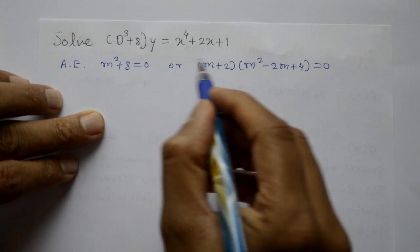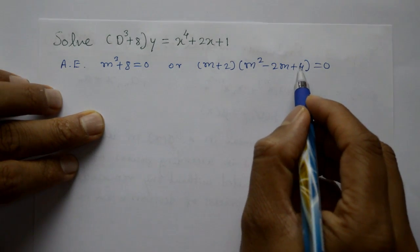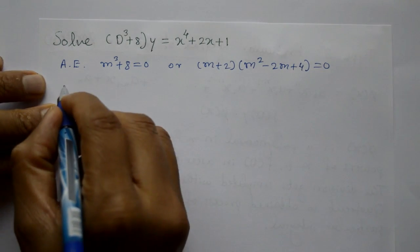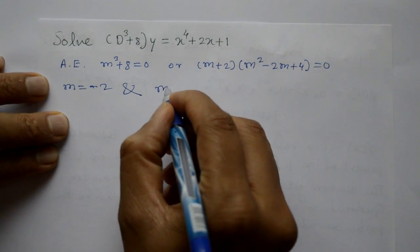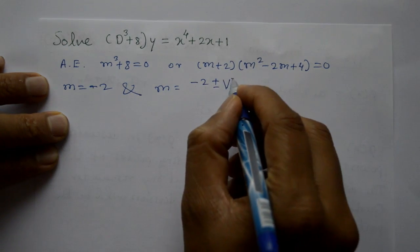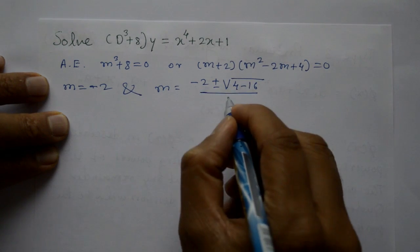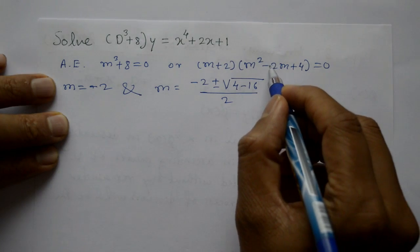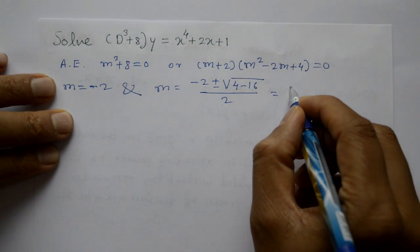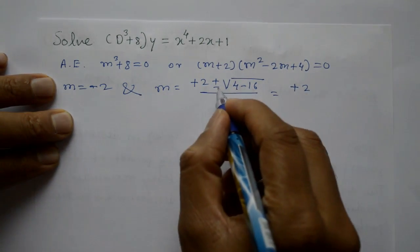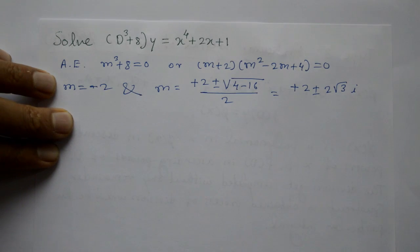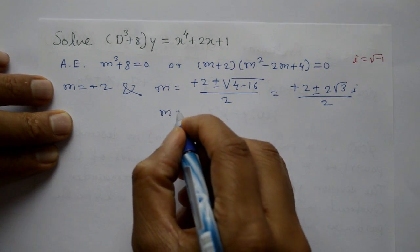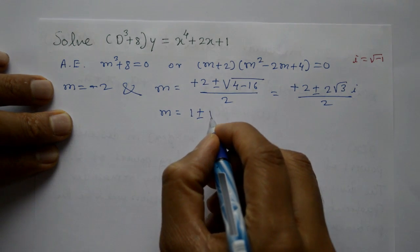For the quadratic m² − 2m + 4 = 0, use the quadratic formula: m = [−b ± √(b² − 4ac)] / 2a, with a = 1, b = −2, c = 4. This gives m = [2 ± √(4 − 16)] / 2 = [2 ± √(−12)] / 2 = [2 ± 2√3·i] / 2 = 1 ± √3·i.